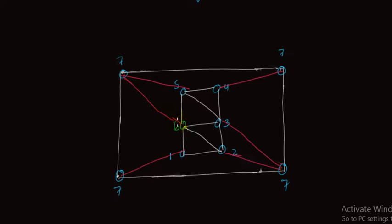Now we have to join all other vertices. Consider vertex 1: vertex 1 is connected to vertex 2, vertex 1 is connected to vertex 7, vertex 1 has a connection with vertex 6, but vertex 1 has no connection with vertex 3 and no connection with vertex 4. Also vertex 2 needs a connection with vertex 4 and vertex 2 needs a connection with vertex 5.